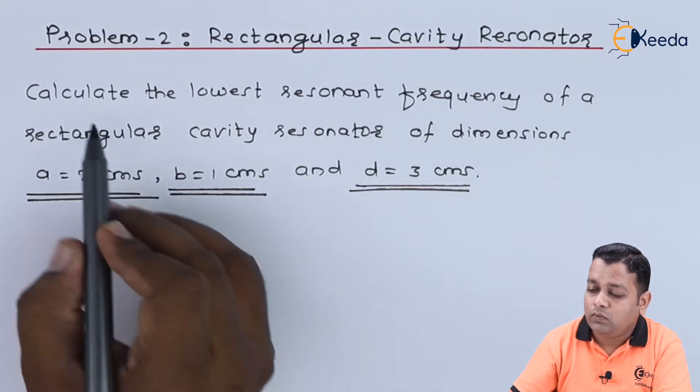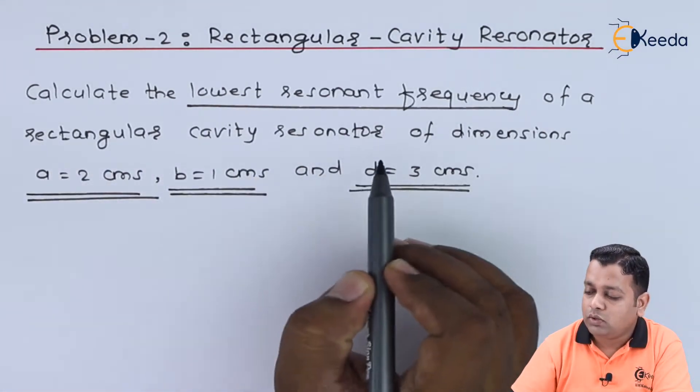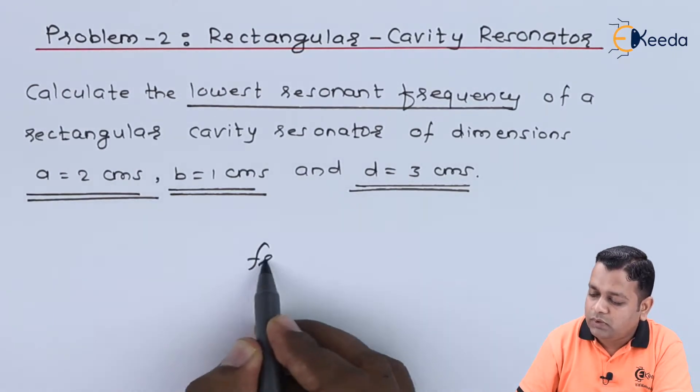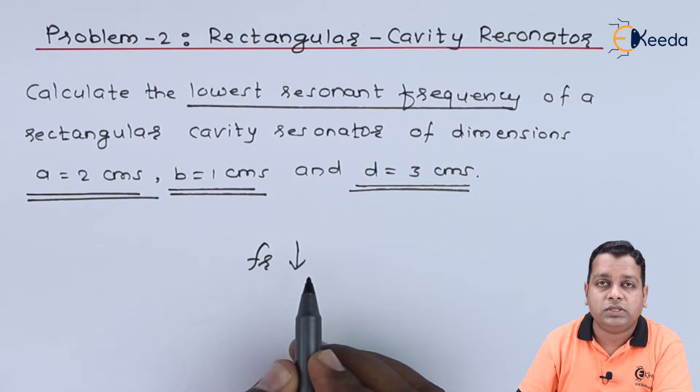We are asked the value of lowest resonant frequency. The resonant frequency we generally represent as F subscript R, but we want the lowest value here.